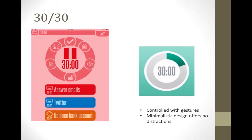30-30 is a task management app with more of a visual component. With this application, you set up a list of tasks along with a length of time for each of them. When you start the timer, it will tell you when to move on to the next task. The timer is controlled entirely with gestures with a minimal display.